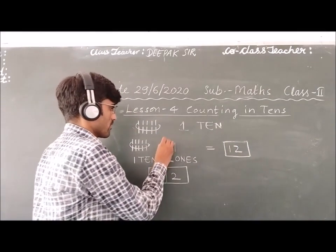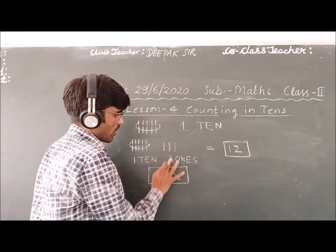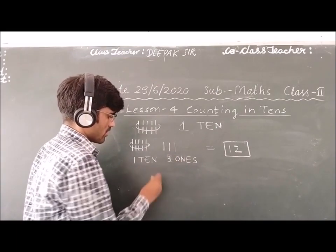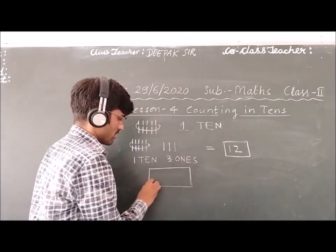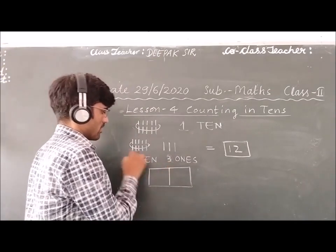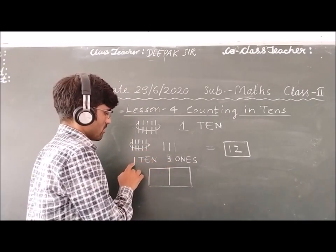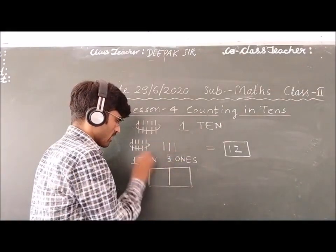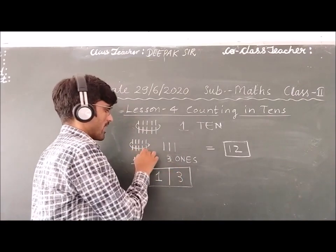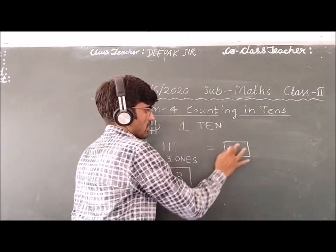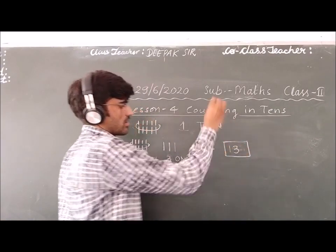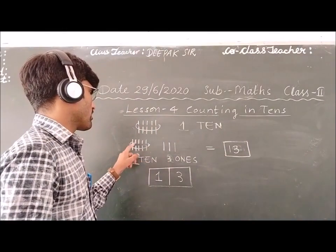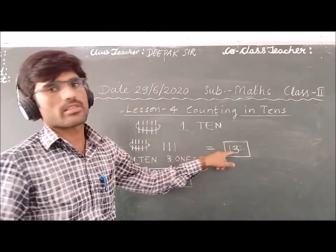If you have three ones — how many ones? Three ones. So in this condition, one ten, and here we have three ones. How many lines are here? 10, 11, 12, and 13. This is 13.